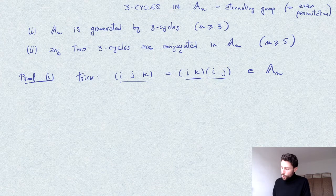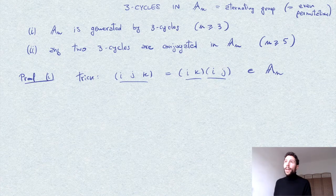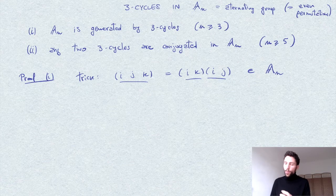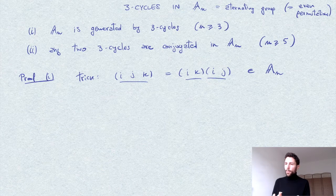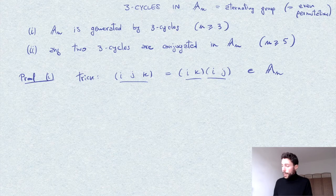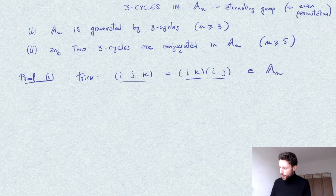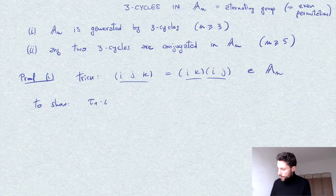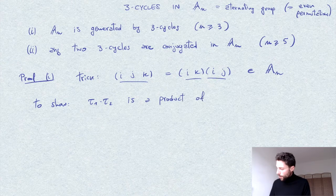To show that An is generated by three-cycles, note that any element of An can be written as a product of transpositions, and since it is even, this will be an even number of transpositions — that is, a product of pairs of transpositions. So it is enough to show that the product of any two transpositions can be written as a product of three-cycles. We only need to show that τ₁·τ₂ is a product of three-cycles.